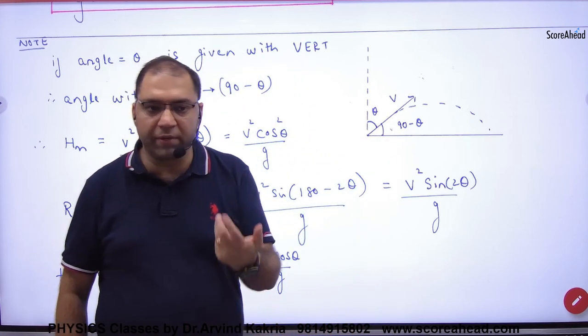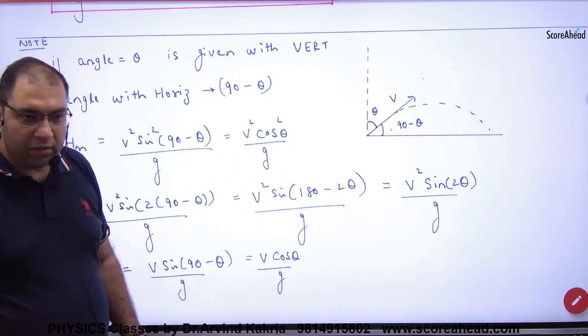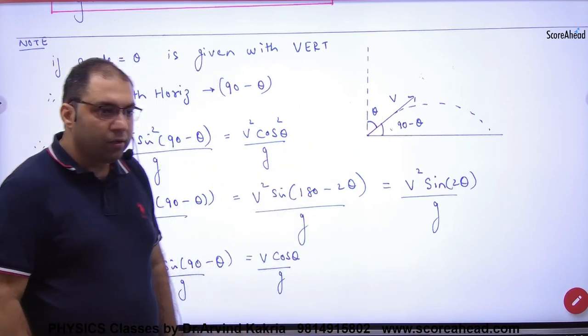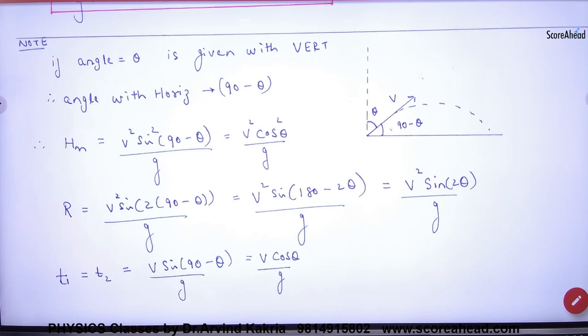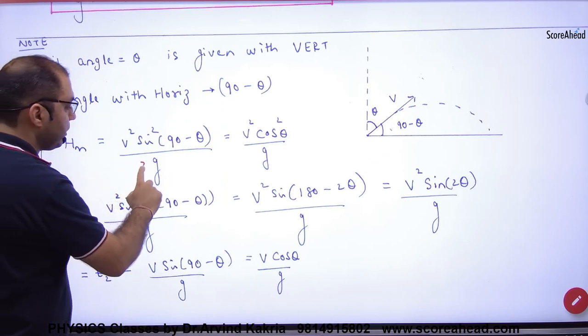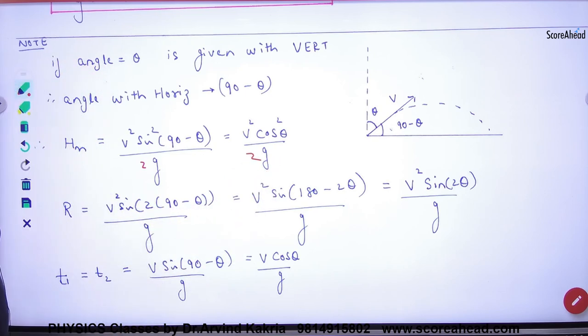Now, what do we do in this case? We remember the formula. What is the maximum height? V square sin square theta divided by 2G. No, it's 2G, correction. Okay?